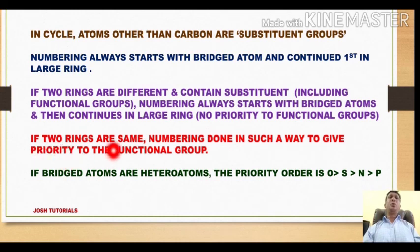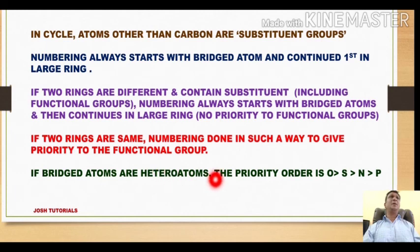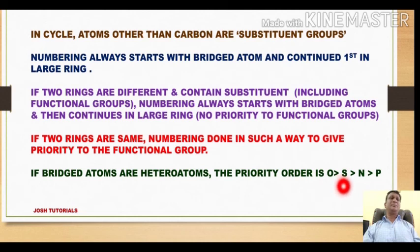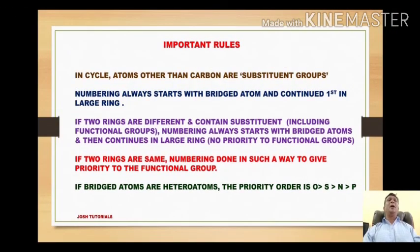If the two rings are the same, numbering is done so as to give priority to the functional group. If any bridged atom is a heteroatom, follow the priority order: oxygen first, then sulfur, then nitrogen, then phosphorus.